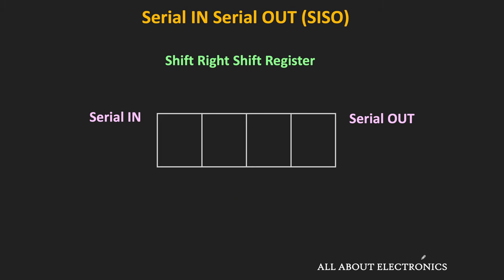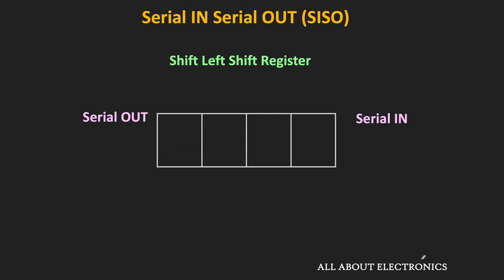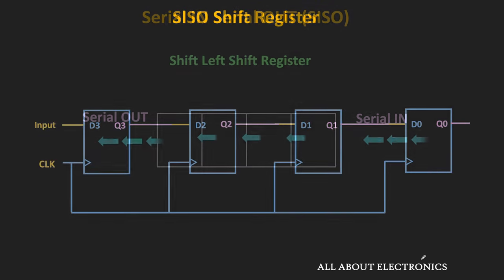In the shift-right type of SISO register, the data is entered from the left side and it is also moving from left to right. Similarly, in the shift-left type of SISO register, the data is entered from the right side and it is moving from right to left. So first, let us talk about the shift-right type of SISO register.